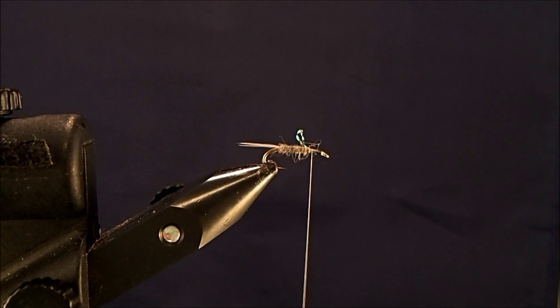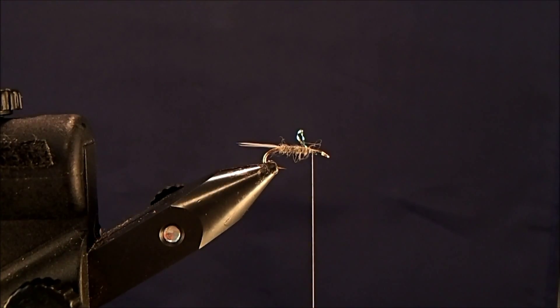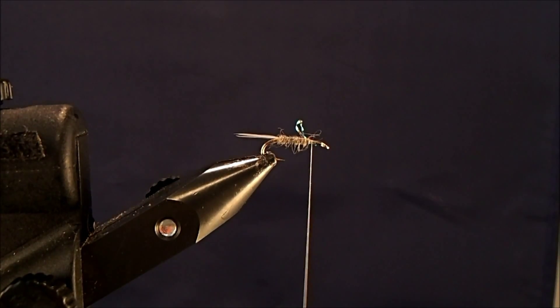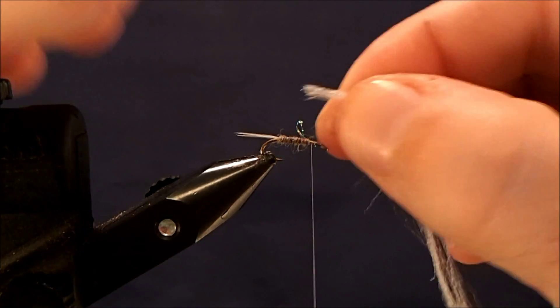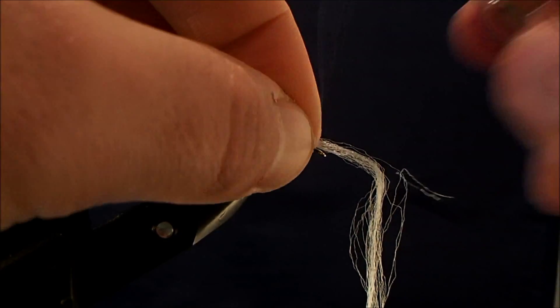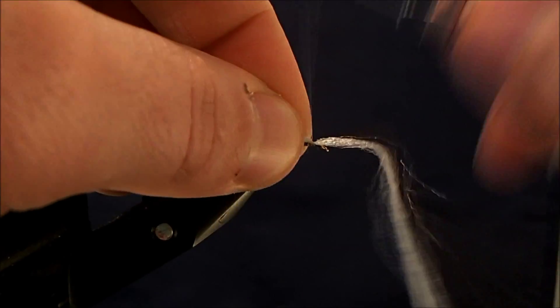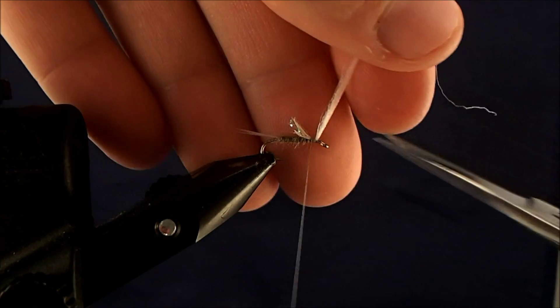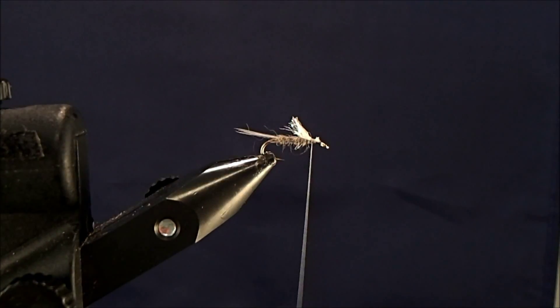Then I'll go back and I'll put in my actual wing casing. And for this, I use Antron white yarn. I'll just take a section of that off. And this I wet as well, just because I find it's easier to work with when it's a little wet. Hold it in just to the back and tie in that section. And then come back through and clip that.